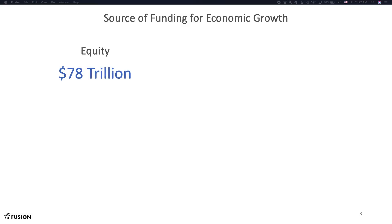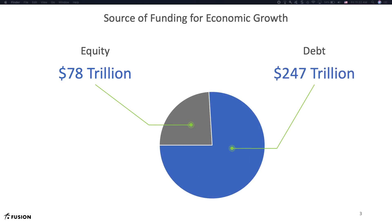When people think of measures of the financial market, they often think first of equity markets. At 78 trillion dollars of market value, not including derivatives, it's indeed a large source of capital. However, many people overlook a bigger driver of economic growth: debt, such as bonds or loans. With a combined size of over 247 trillion dollars, again not including derivatives, it is three times the size of the equity market and is accessed by companies, countries, and certainly individuals. As Fusion's goal is to enable financial transactions in the digital economy, supporting debt is one of our top priorities.